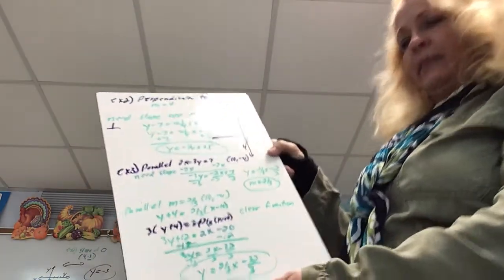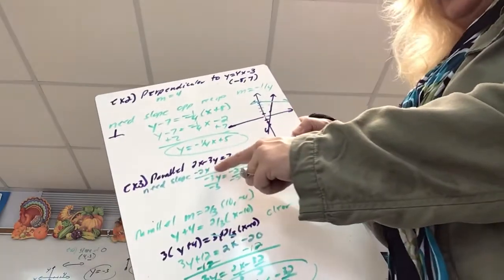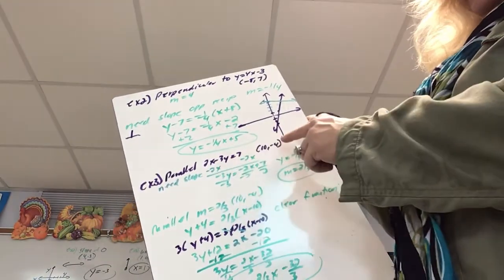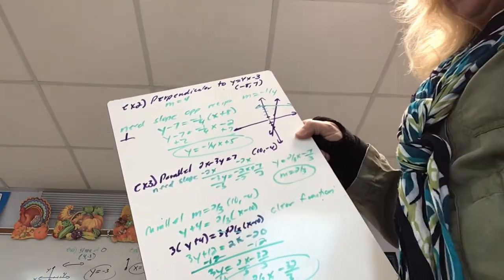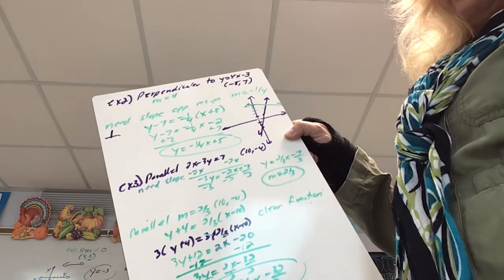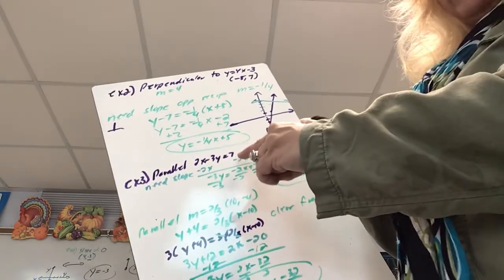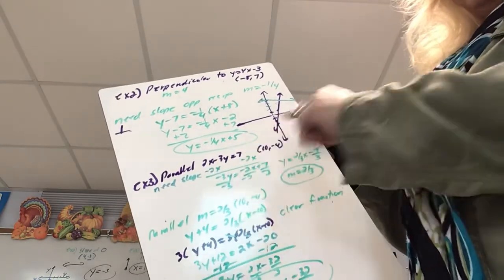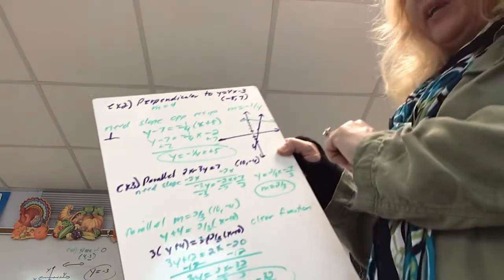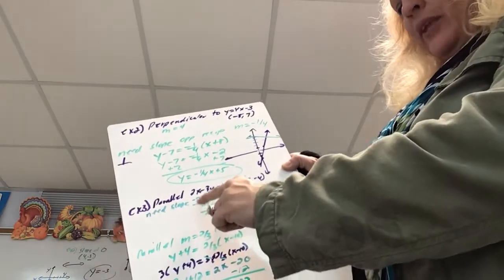Let's look at example 3. I want an equation of a line parallel to that line going through the point (10, negative 4). This equation is in standard form, which looks great but doesn't help me find the slope. So I need to find the slope of this line.